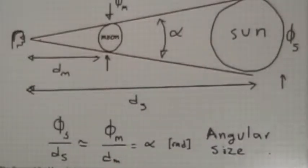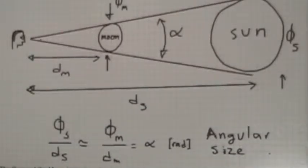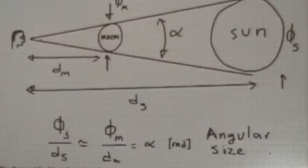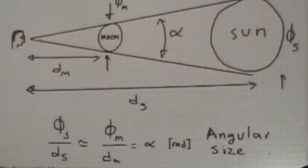Let's talk about a very important concept when dealing with optical instruments — the purpose of them is to make images, to look at objects and see a bigger version of the object. Think about the size of the moon and the sun. Just by chance, it turns out that when you look at the sky and you compare the size of the sun and the moon, they are about the same.